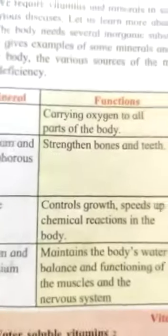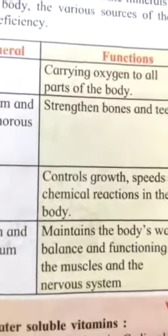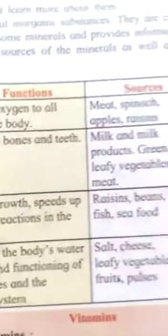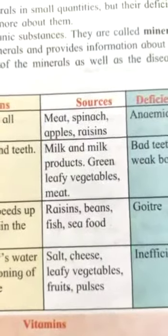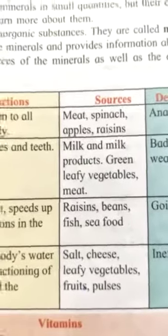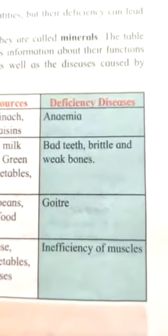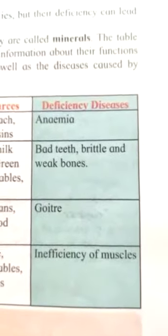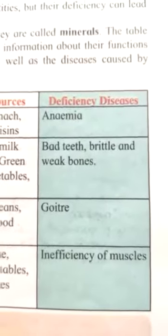Next, calcium and phosphorus. They make the bones and teeth stronger. Sources: milk and milk products, green leafy vegetables and meat. Deficiency disease: bad teeth, brittle and weak bones.